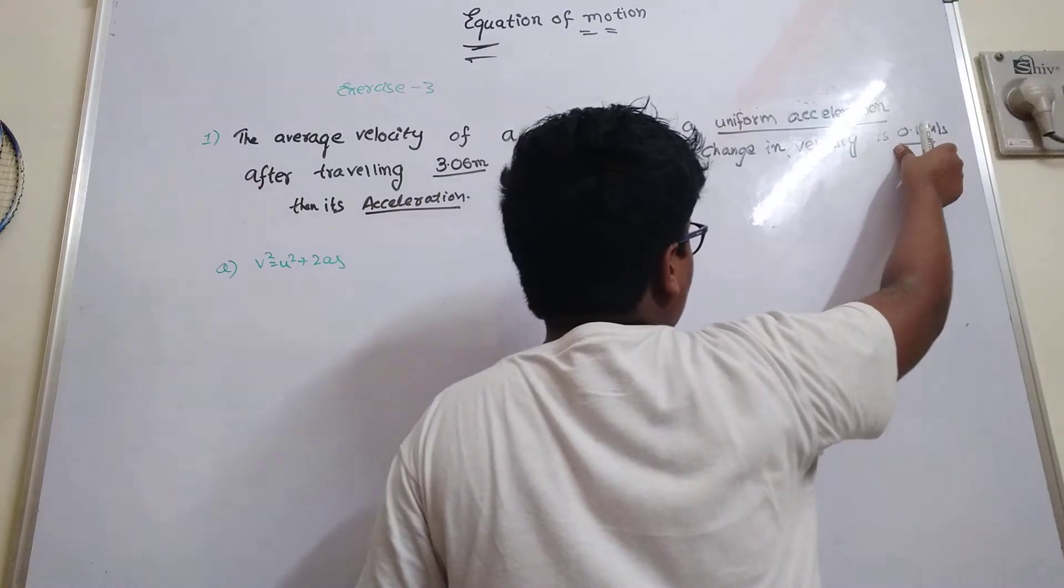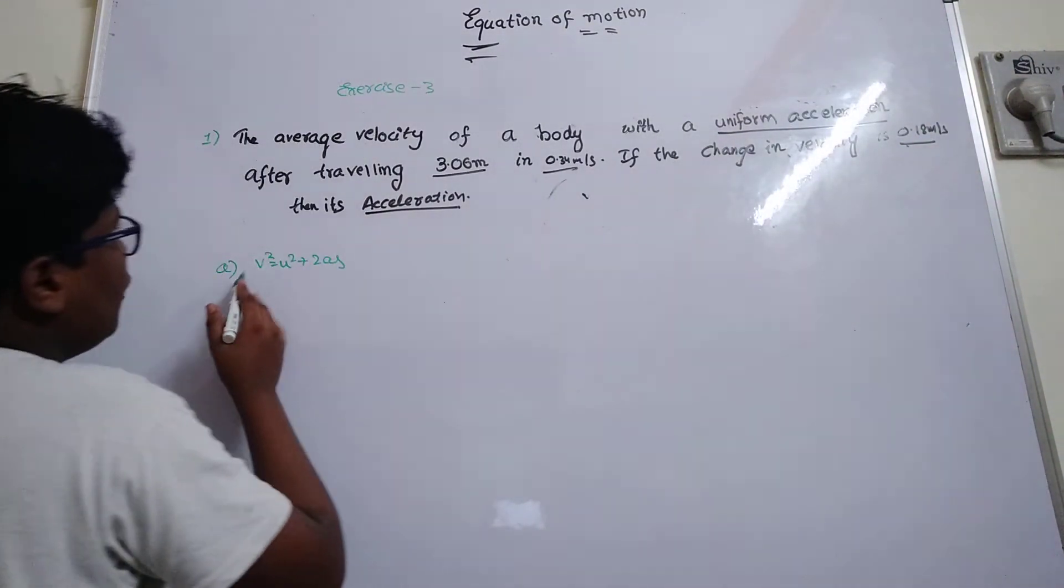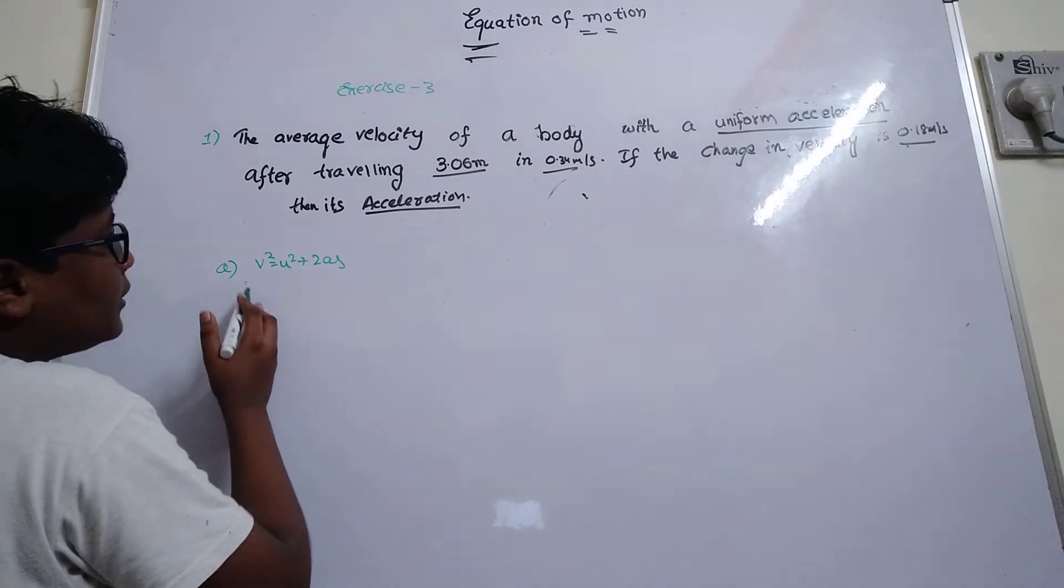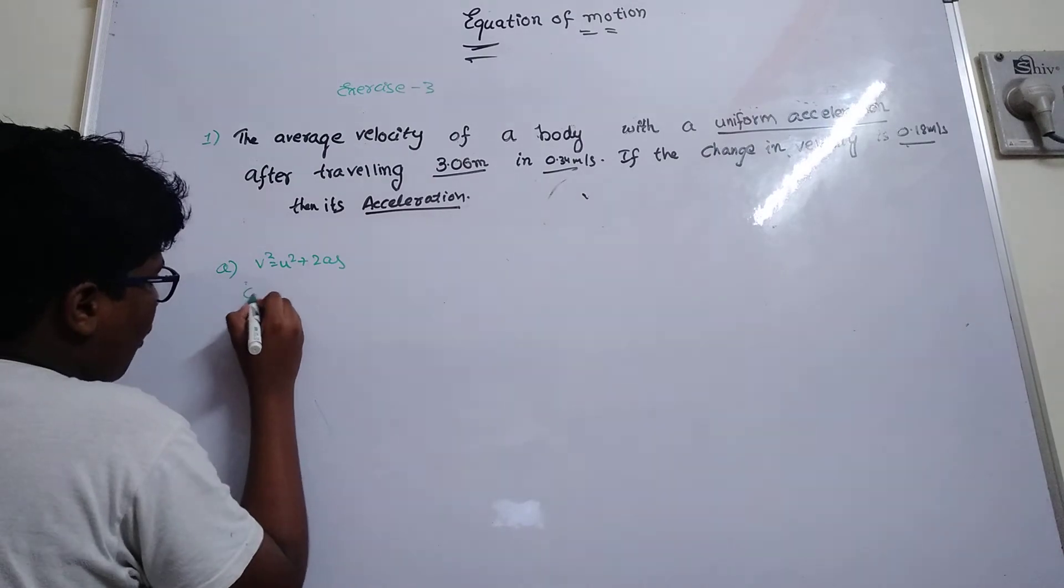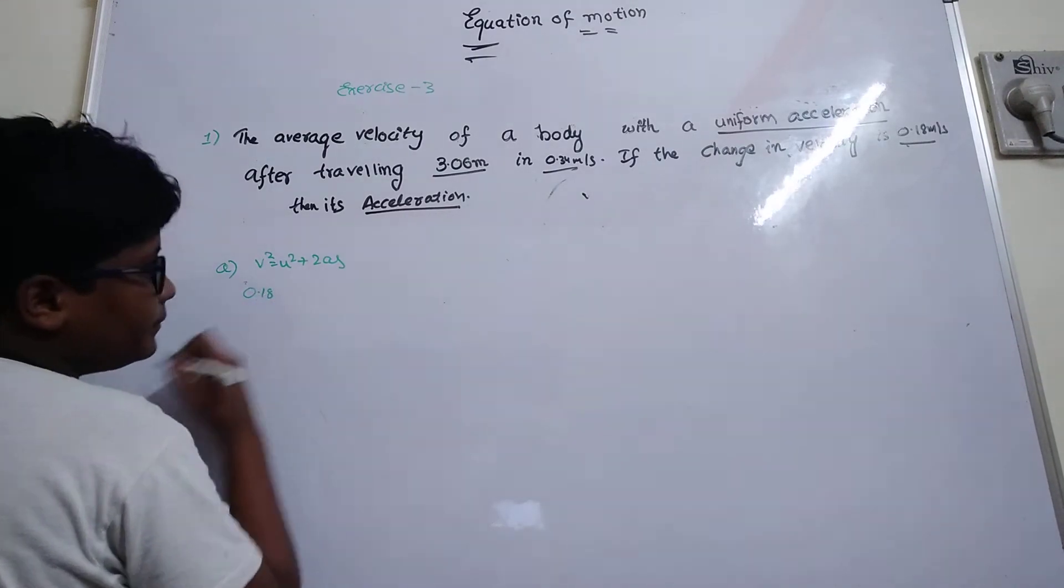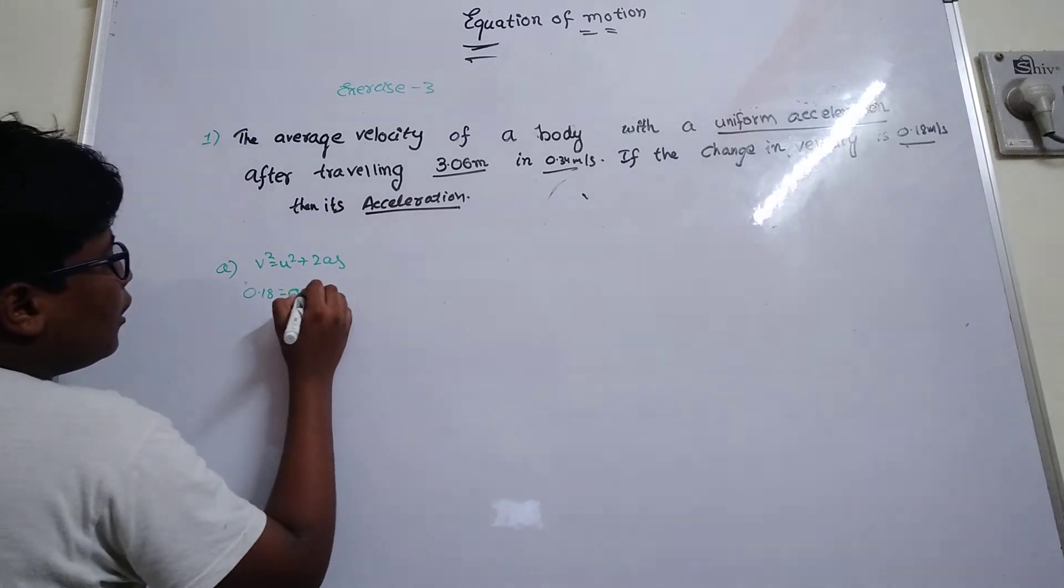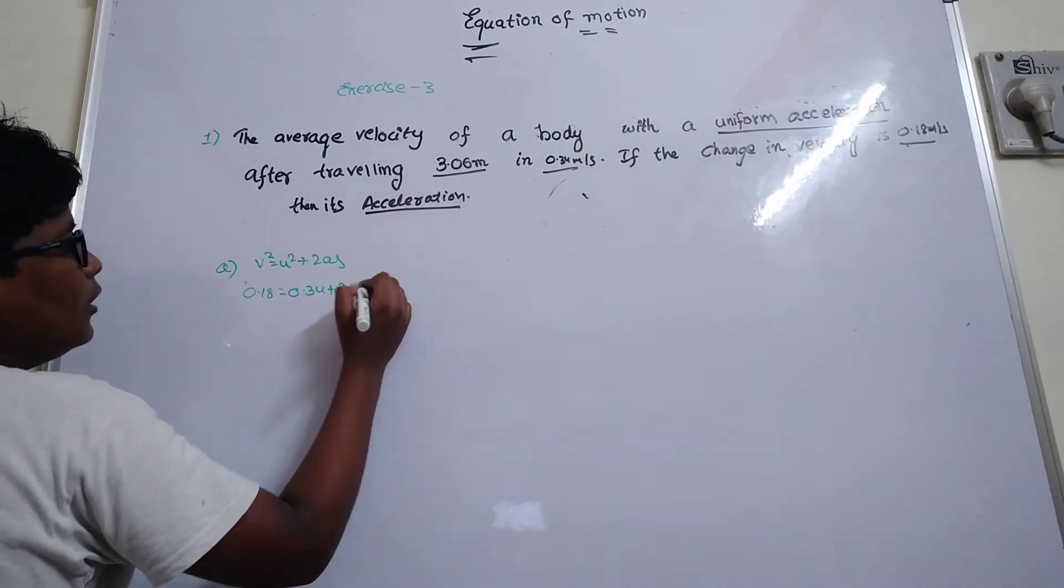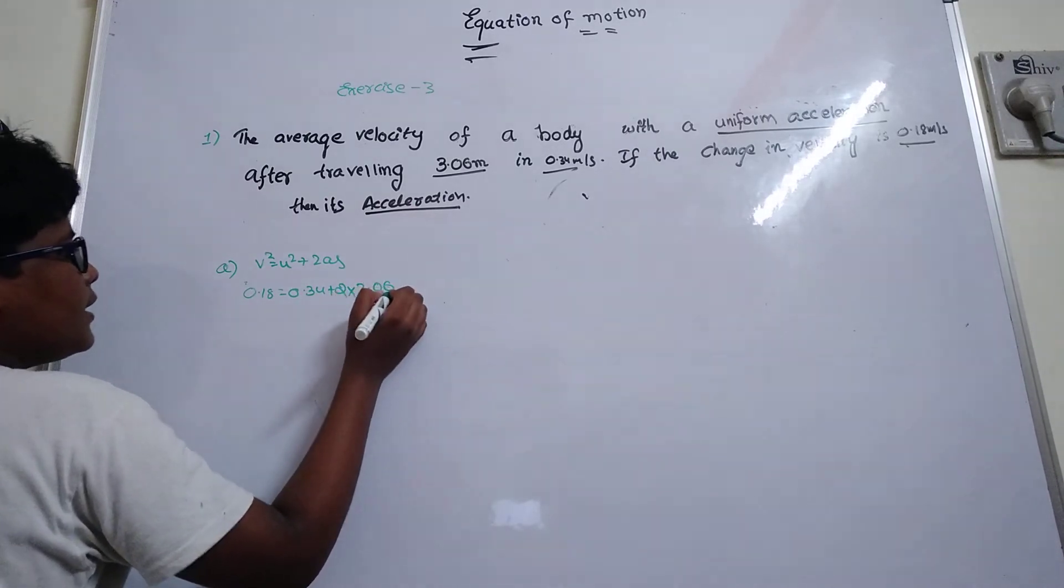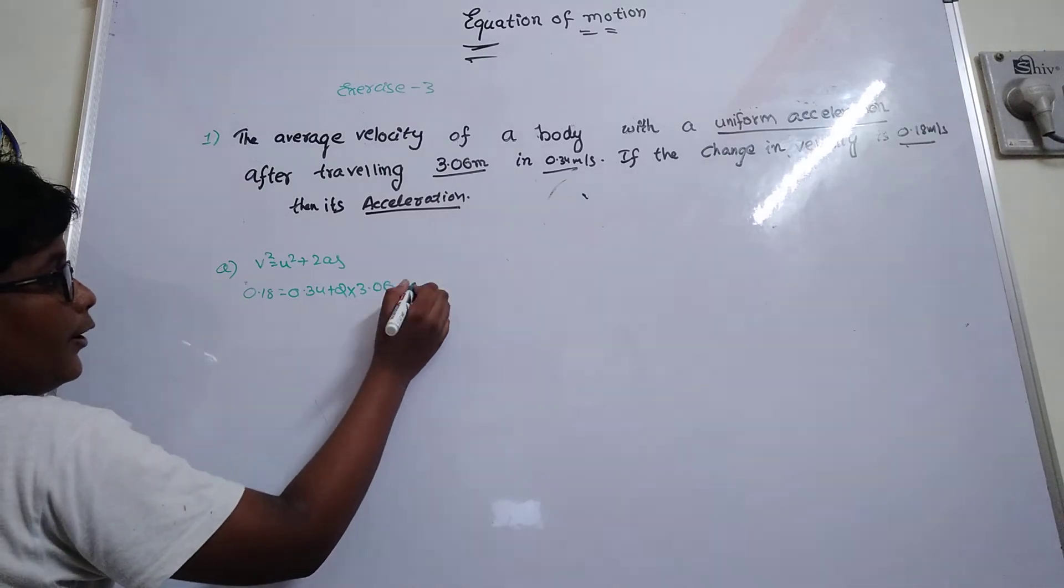Here, the changing velocity is 0.18 meters per second. Okay, now V² how much? 0.18 equals 0.34 plus 2 into 3.06 into S. Sorry, into A.